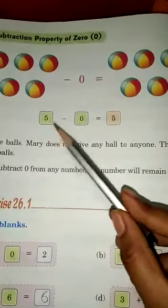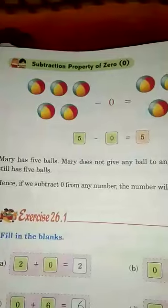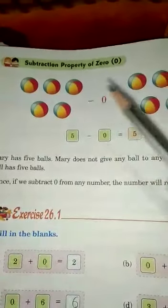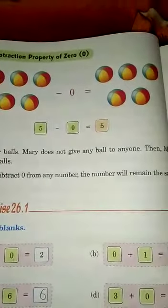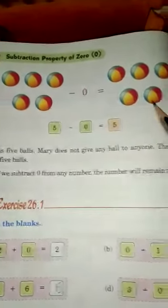See, 5 minus 0 equals 5. Mary has 5 balls. Mary does not give any balls to anyone. Then Mary still has 5 balls.